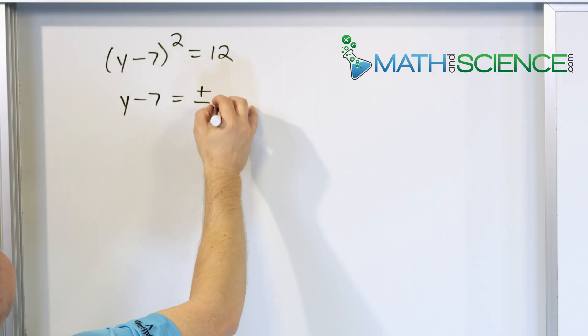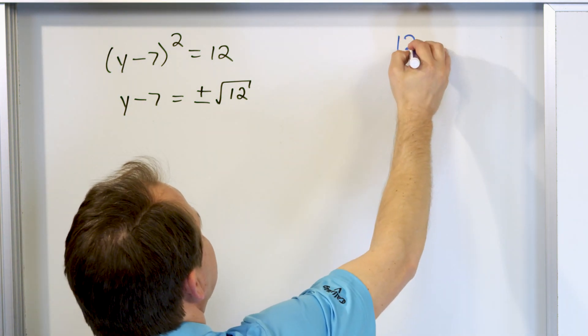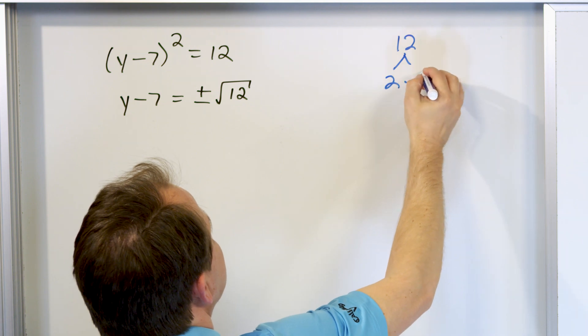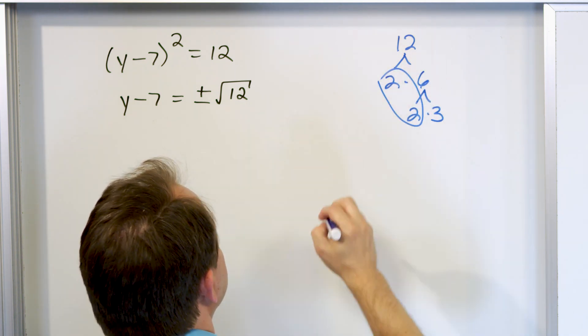On the right, I have to insert my plus or minus, and then I have to take the square root of 12. Now what you need to do at this point is go off to the right and remind yourself, what is the square root of 12? 2 times 6, and that's 2 times 3. So we have a pair of 2s here.